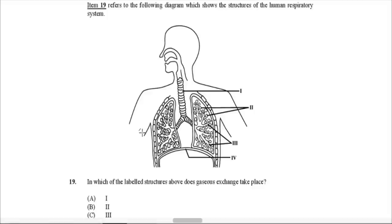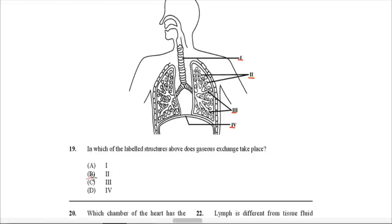Question 19 refers to a diagram of the structures of the human respiratory system. In which labeled structure does gaseous exchange take place? Gaseous exchange occurs in the alveoli. Label 1 points at the trachea, label 2 points at the alveoli — those little air sacs — which is where gaseous exchange takes place, label 3 points at the bronchioles, and label 4 labels the diaphragm. So the answer for 19 is B.